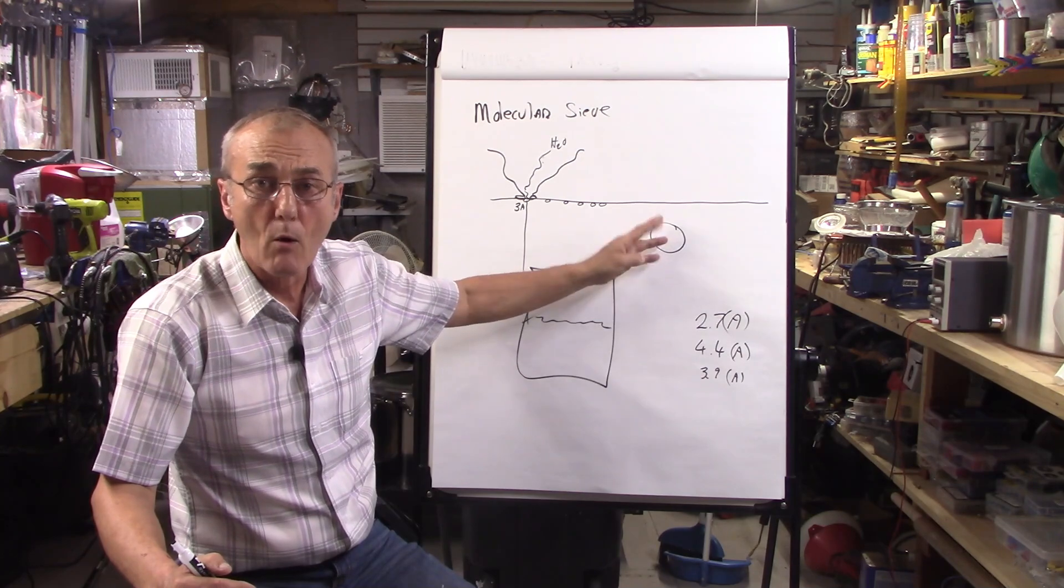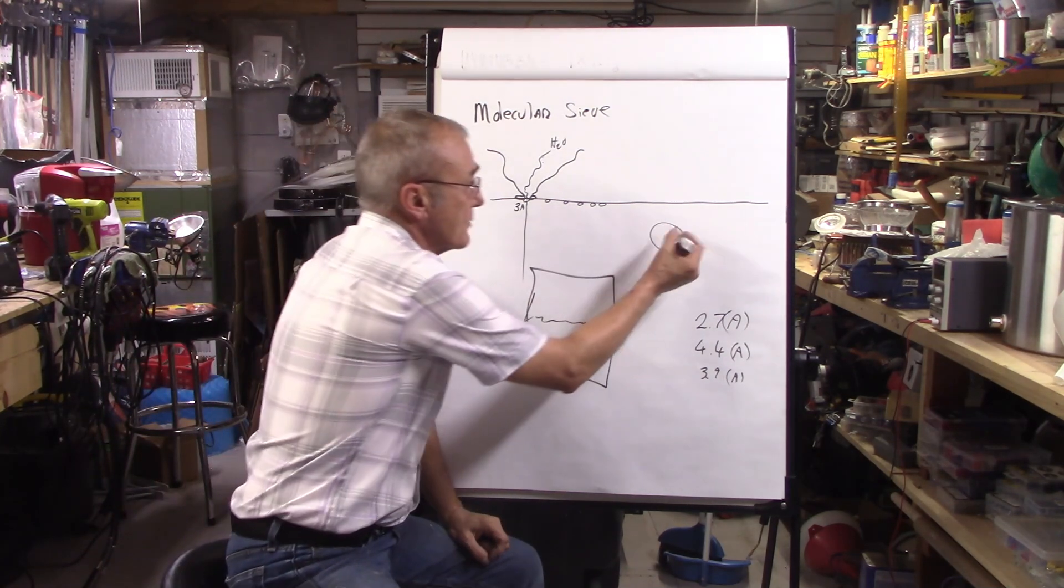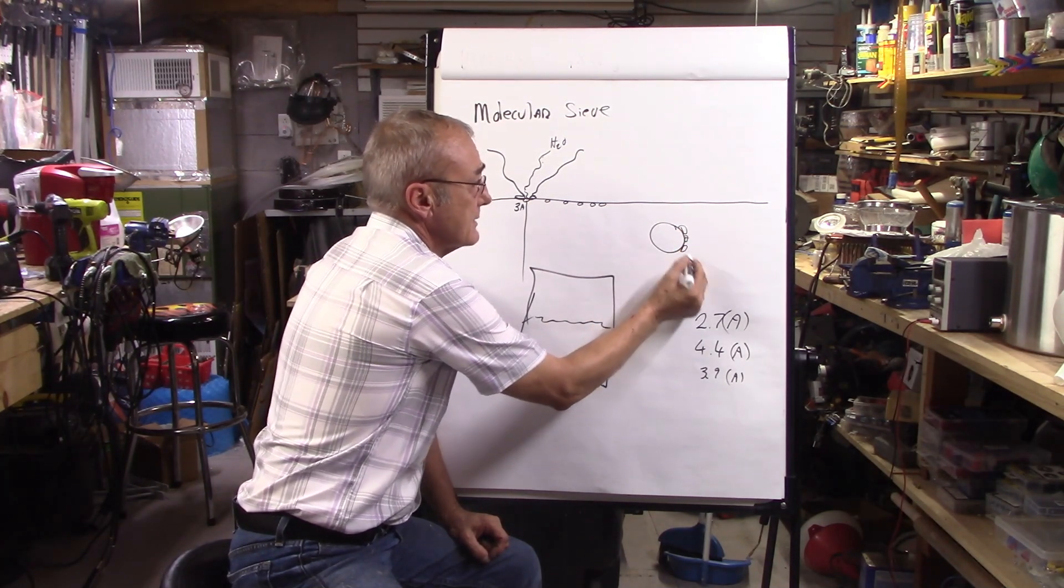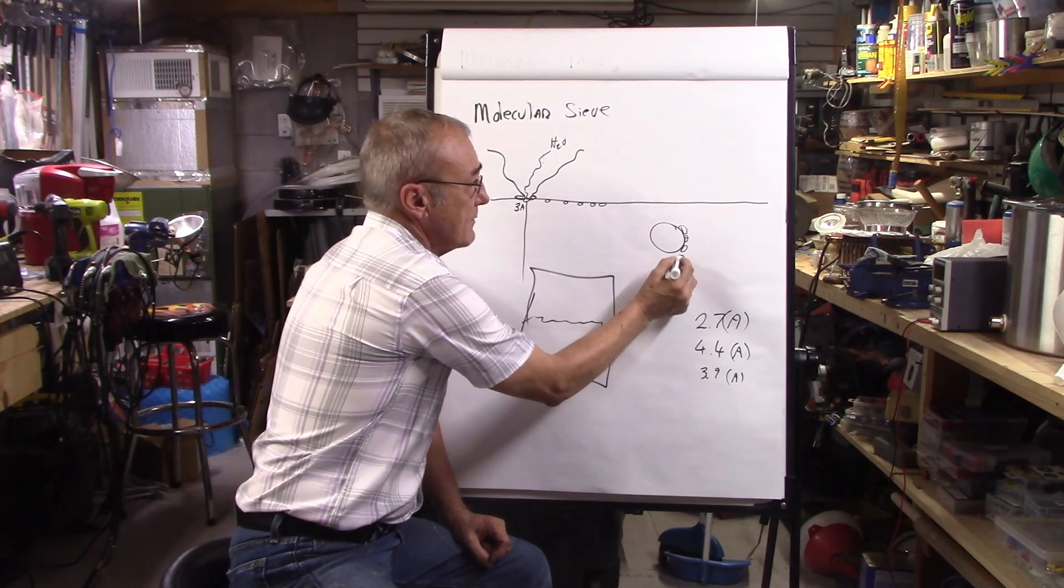They can absorb about 20% of their weight, so it takes a whole lot of them. But the point is that it will only absorb or allow water into it that gets trapped. And of course all your ethanol and anything else that's larger than three angstroms is just going to fall off.